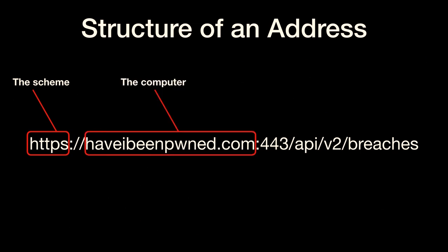Then you have the computer — this piece is usually taken care of by DNS. DNS is going to turn that into an IP address and the request is going to go to that computer. The next piece is the port number. This is how the computer knows how to route the request to a specific application. Port 443 is an HTTPS server usually, but we're going to be using 8080 later. That port number is how the request gets from the network boundary into your specific application. When we start our application, we have to have a port so that the operating system knows where to find us.